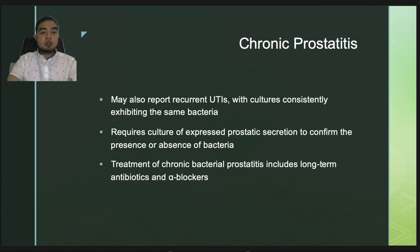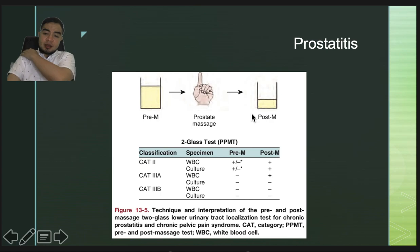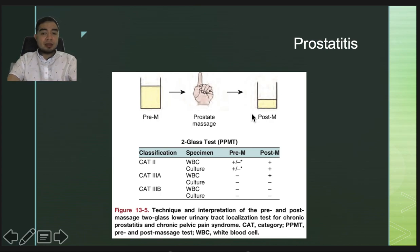Differentiation between the two etiologies requires culture of expressed prostatic secretion to confirm the presence or absence of bacteria. Treatment of chronic bacterial prostatitis includes long-term antibiotics and alpha blockers to relieve symptoms. Here is the two-glass test, wherein you perform a rectal exam and massage the prostate to obtain the specimen.